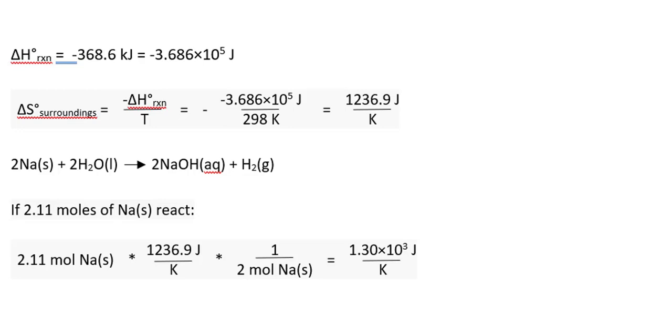Because if it were exactly 2, we would end up with 1,236.9 joules because we have 2 moles in the equation. We could solve this using dimensional analysis: we start with 2.11 moles of sodium and use the ratio 1,236.9 joules for every 2 moles of sodium.